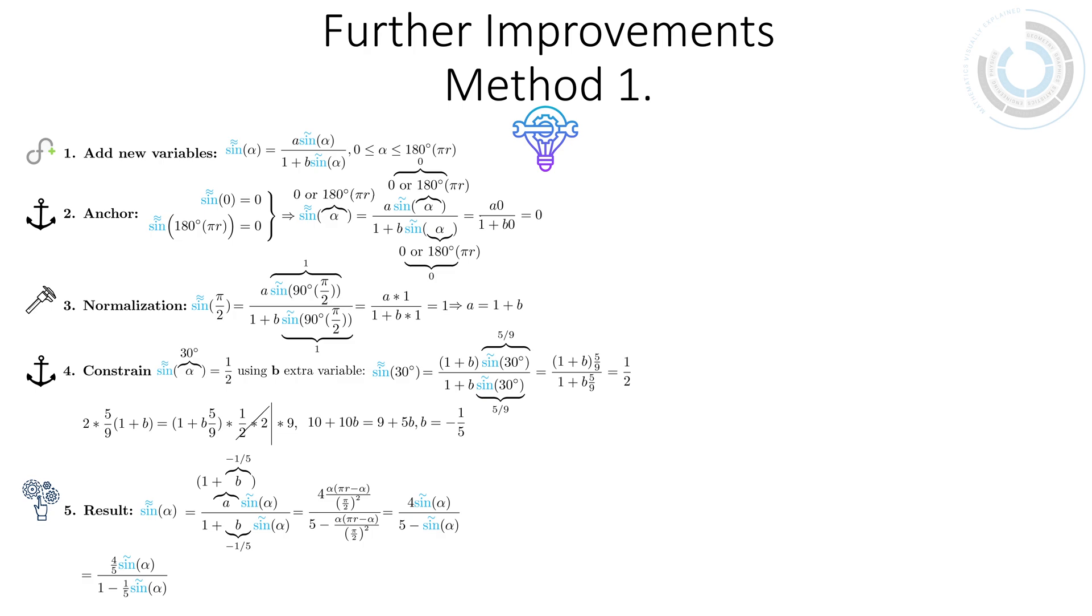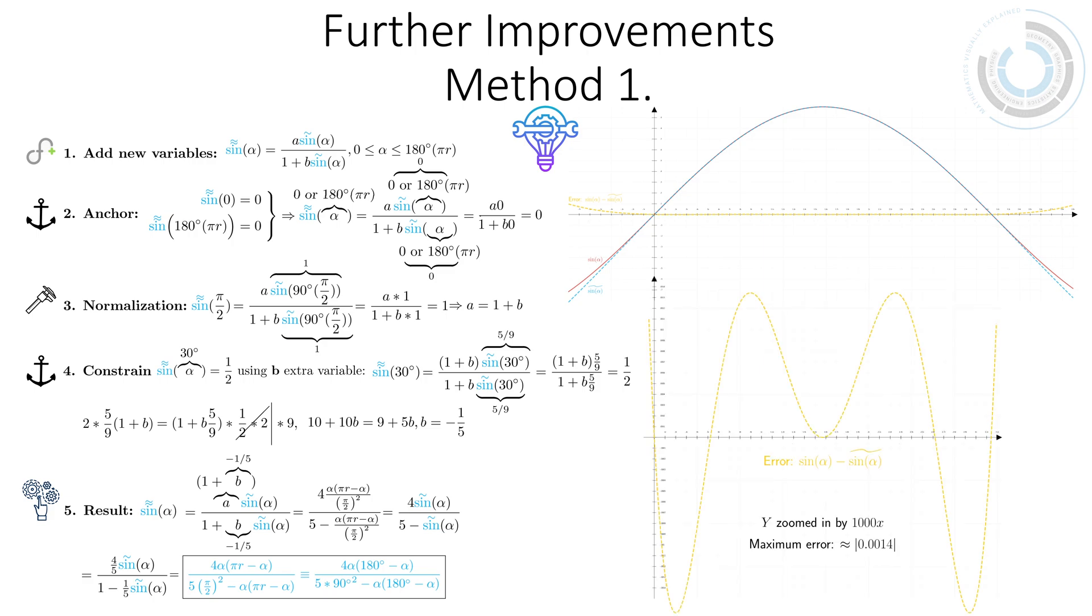By looking at the errors, we can see that it's slightly closer than our earlier simplified version. Now zooming in 1,000 times reveals a slight fluctuation at the maximum point of 1/4000.